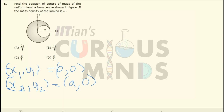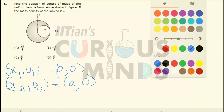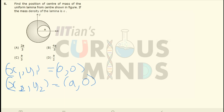Along the y-axis, the center of mass will anyway come out to be 0, so we have to find out only the x-axis component. Before we proceed, let us first find out the mass of the smaller circle that has been removed. The mass of the larger circle will be equal to the areal density into the area.